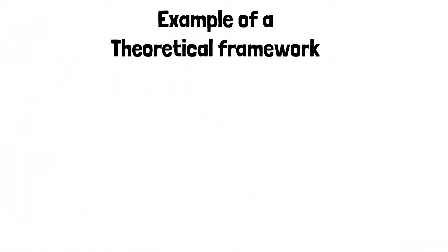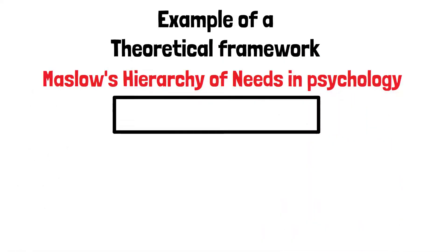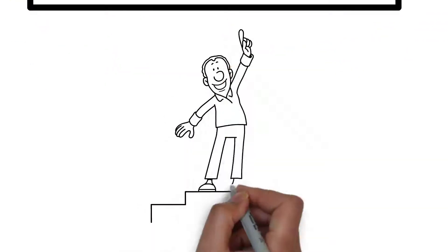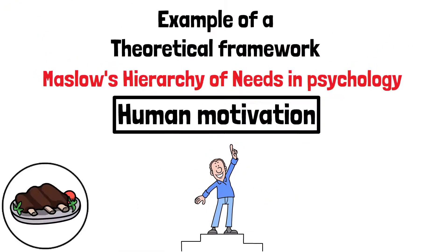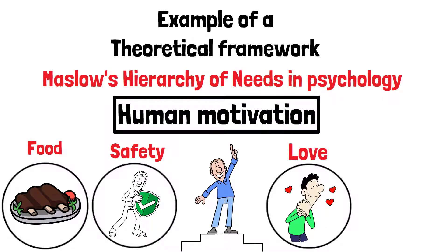An example of a theoretical framework is Maslow's Hierarchy of Needs in Psychology. This framework explains human motivation by suggesting that people are motivated to fulfill basic needs like food and safety before moving on to higher needs like love and self-actualization.